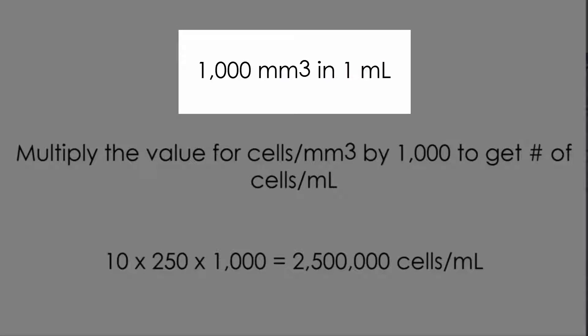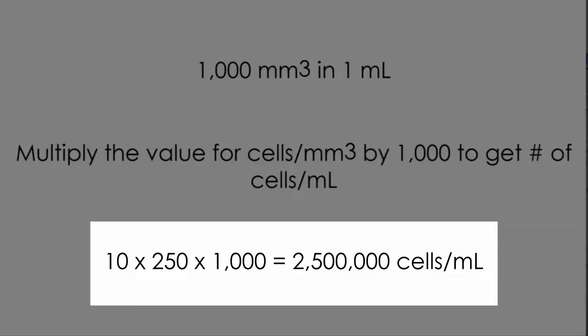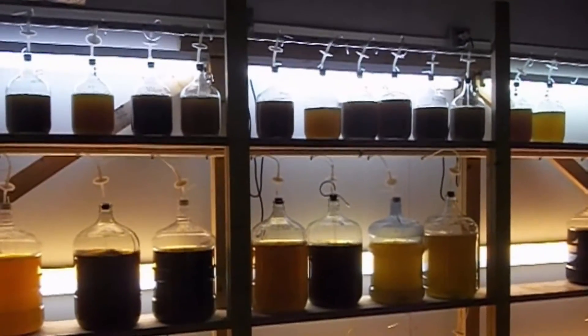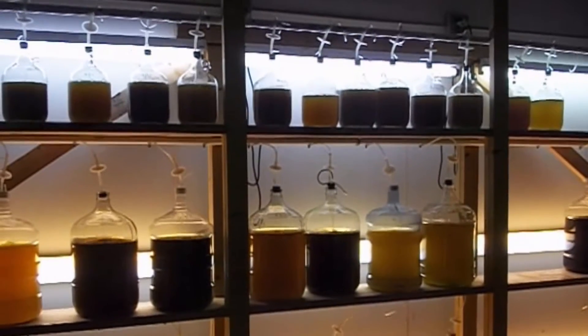Since there are 1,000 cubic millimeters in 1 milliliter, or cubic centimeter, multiply the value by 1,000 to get the number of phytoplankton cells per milliliter. That would be 10 times 250 times 1,000 — so this culture has 2,500,000 cells per milliliter. The aquaculturist can then simply calculate the volume of algae culture required to provide a specific cell density in the culture tank of a given volume.